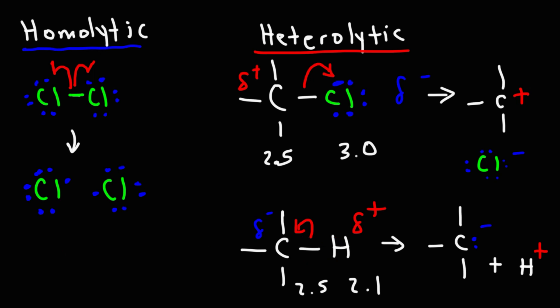In a heterolytic bond cleavage, the two electrons go to one of the two atoms that had the bond. But in a homolytic bond cleavage, each atom participating in that bond leaves with one electron from that bond.